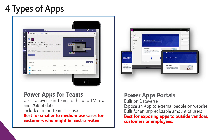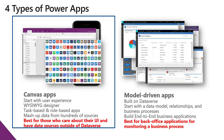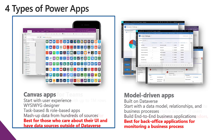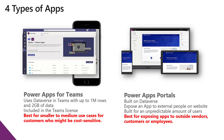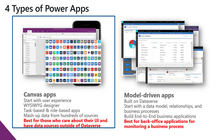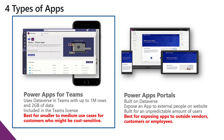When it comes to licensing: Canvas applications can be free with your Office subscription, or paid if you use a premium connection like Salesforce, SQL Server, Oracle, or Dataverse. Excel and SharePoint are considered free connections. PowerApps for Teams is a free application included in your Teams or Office 365 license. Portals and model-driven apps require paid licenses because they use Dataverse.